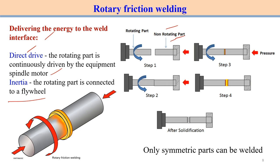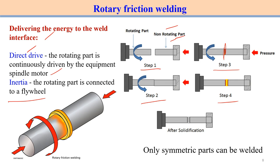The steps of rotary friction welding are: step one — one non-rotating part and one rotating part; step two — bring them into contact; step three — apply pressure, generating heat at the interface; step four — a flash ring forms at the interface. After the process, the temperature is maintained below melting point, the flash is removed, and the joined component is allowed to cool. The result is a welded joint between the two components.